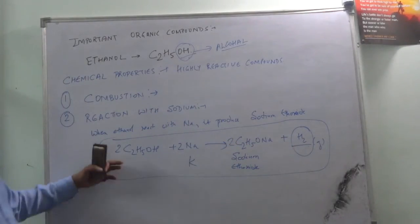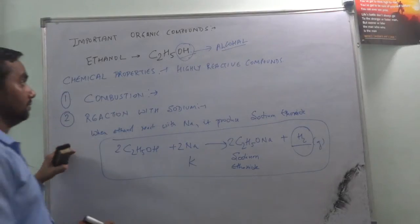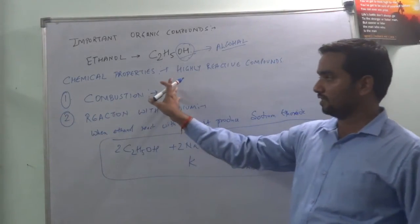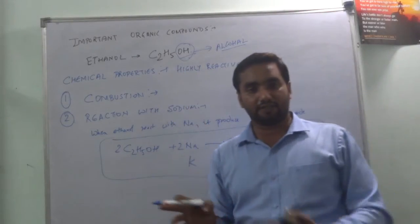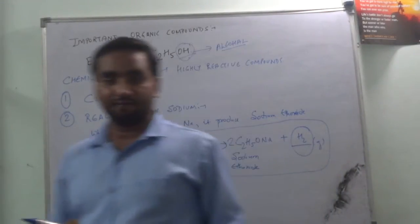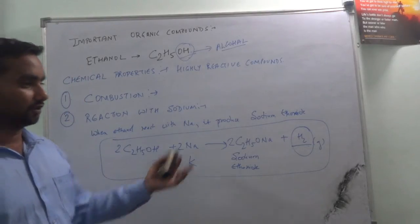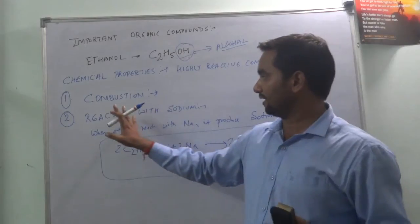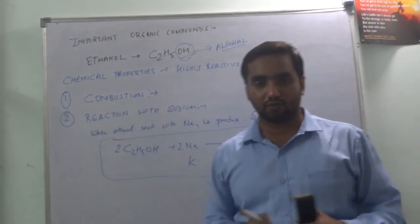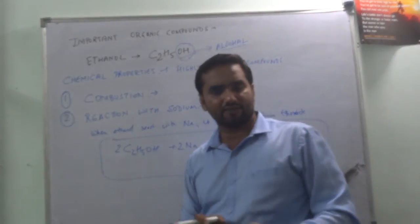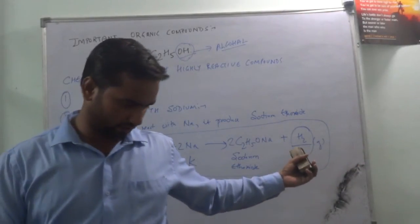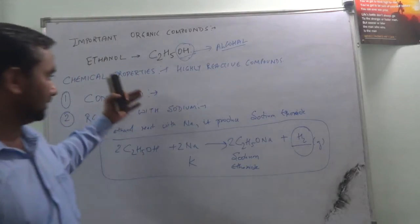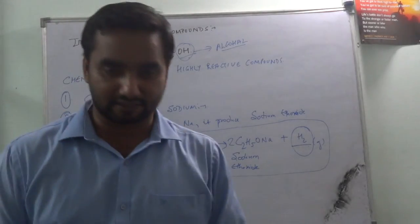So finally we have covered two chemical properties of ethanol: the first is the combustion of ethanol, where ethanol combines with air in the presence of flame to produce carbon dioxide and water; and the second is the reaction of ethanol with sodium, which produces sodium ethoxide. Thank you for watching this video — the remaining chemical properties will be explained in the next video.